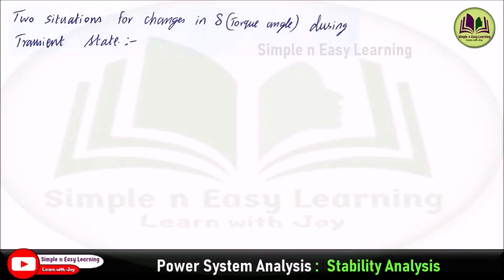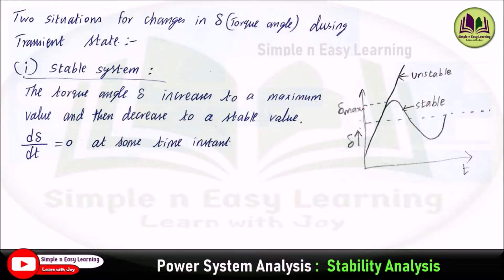There are two situations for changes in the torque angle δ during the transient state — the transient state being a sudden disturbance to the system due to a fault. In the first case, a stable system: the torque angle δ increases to a maximum value and then decreases to a stable value, so dδ/dt equals zero at some time instant.